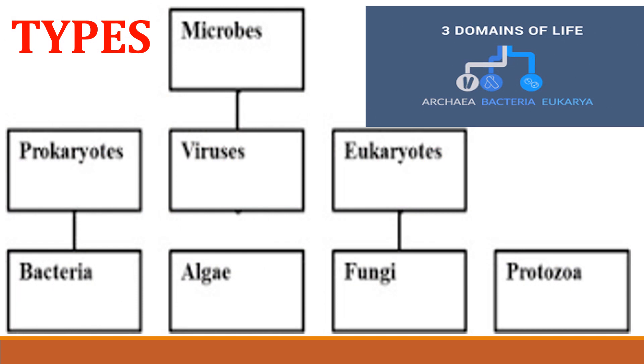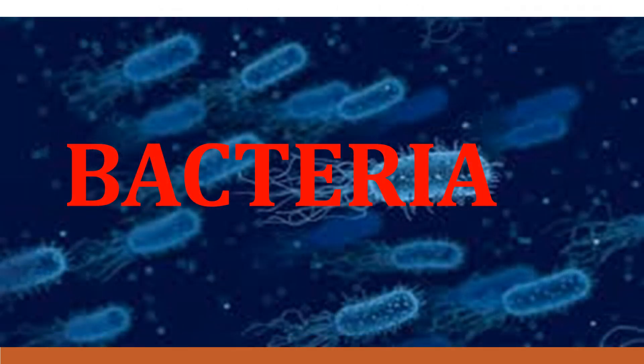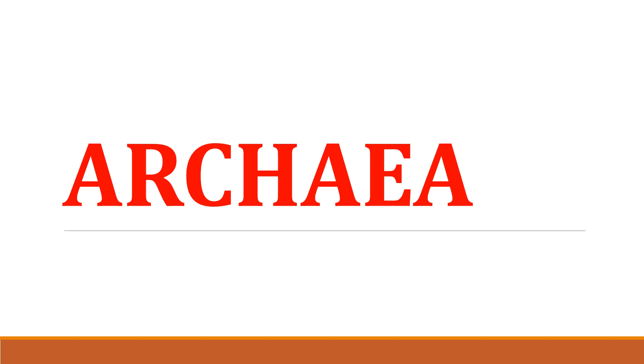Types of microorganisms: Bacteria are unicellular organisms. Because they have no nucleus, their cells are described as prokaryotic. Most bacteria have a peptidoglycan cell wall. They divide by binary fission and may possess flagella. Bacteria can use a wide range of chemical substances for their nutrition. Archaea consist of prokaryotic cells and lack peptidoglycan in their cell walls; Archaea includes methanogens, extreme halophiles, and extreme thermophiles.